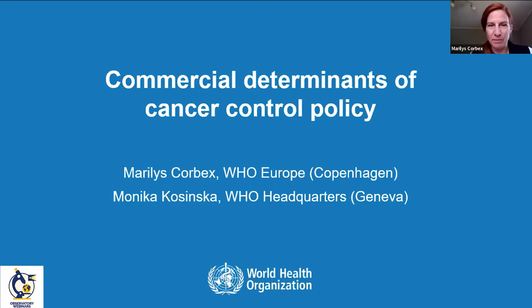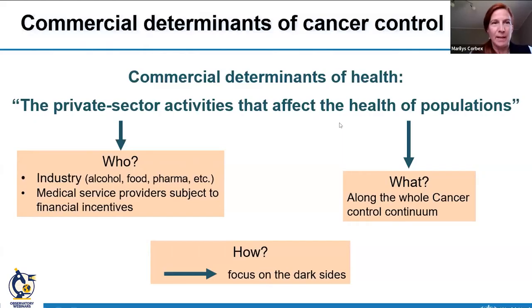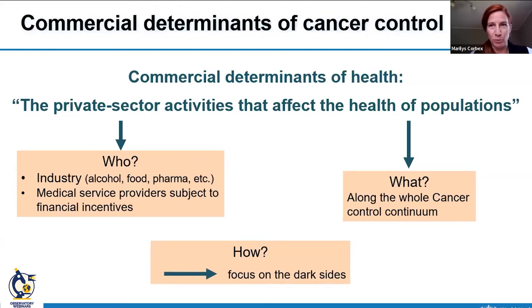Thank you. Commercial determinants of cancer control policy — what is this? First, let's define commercial determinants of health. It's an evolving definition, but today we use this one: private sector activity that affects the health of populations, either positively or negatively. The private sector includes the alcohol, tobacco, and food industries, pharmaceutical companies, medical device makers, and medical service providers such as doctors and hospitals subject to financial incentives.